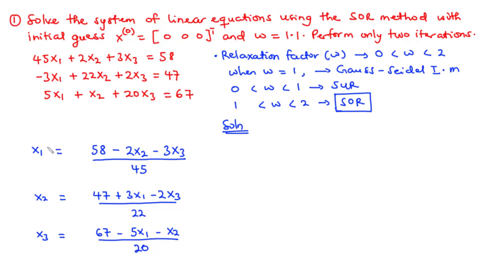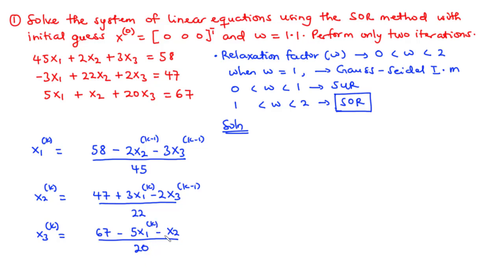On the left-hand side we have xi(k). For x1(k), we have (58 - 2x2(k-1) - 3x3(k-1)) / 45. Once x1(k) is found, we update x2(k) using the most recent value of x1(k), giving (47 + 3x1(k) - 2x3(k-1)) / 22. Similarly, x3(k) uses the most recent values of x1(k) and x2(k), giving (67 - 5x1(k) - x2(k)) / 20. That is the Gauss-Seidel iteration method.